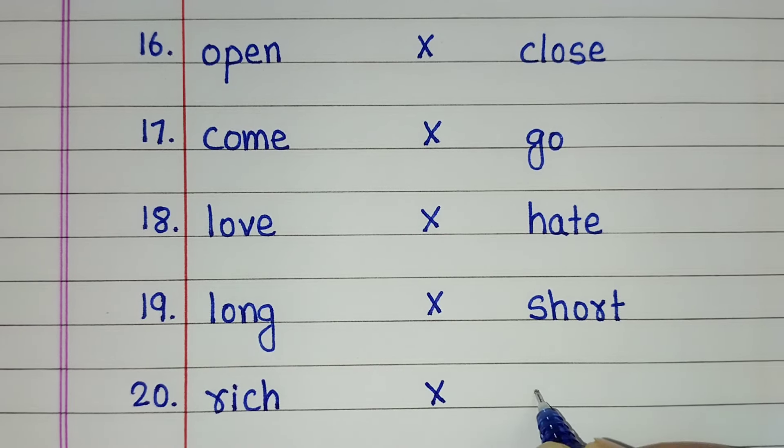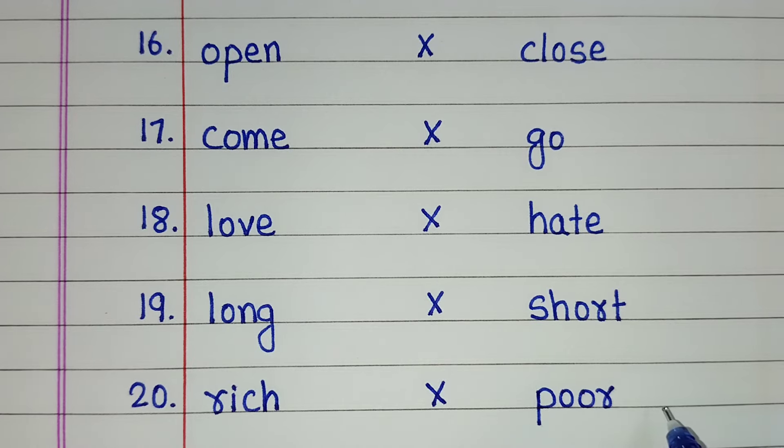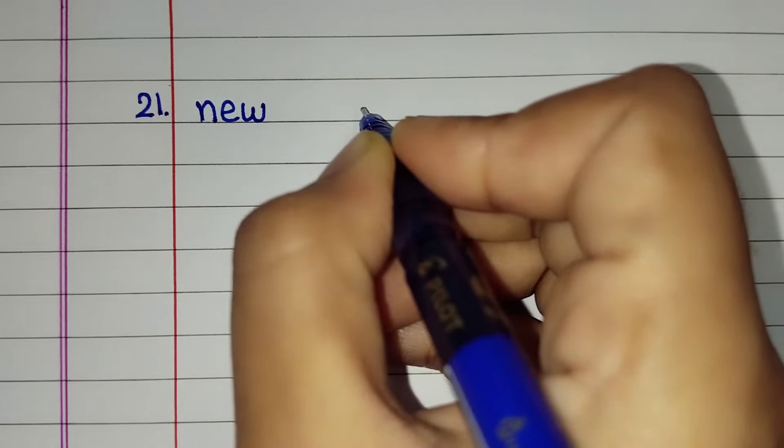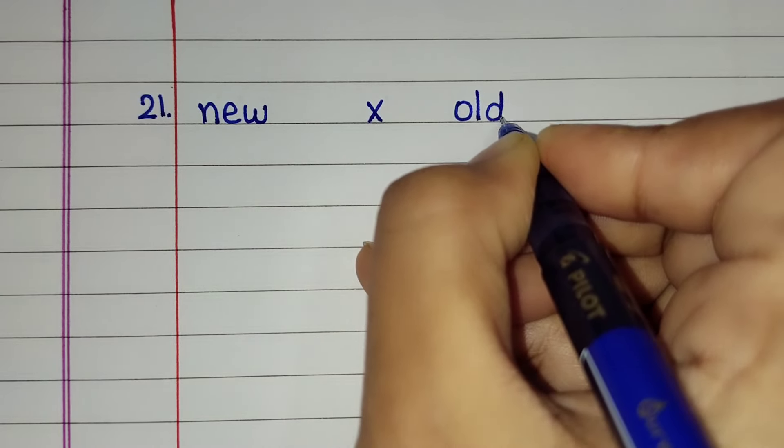Rich. Opposite of rich is poor. New. Old.